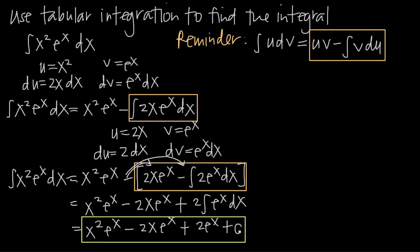So this is a perfect candidate for tabular integration. You only want to use tabular integration when one of the functions inside your integral — here we have x squared and e to the x — has derivatives that eventually go to 0. We can see that's the case with x squared: the derivative of x squared is 2x, the derivative of 2x is 2, and the derivative of 2 is 0. So the derivatives of x squared eventually reach 0, which means we can use tabular integration.